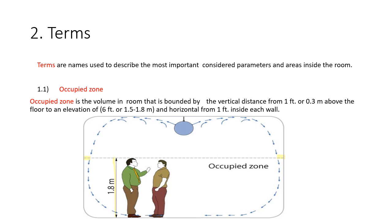We always mention the occupied zone, but what is it exactly? The occupied zone is the volume in a room bounded by a vertical distance of 1 foot (0.3 meters) above the floor up to an elevation of 6 feet, or 1.5 to 1.8 meters. Horizontally, it extends 1 foot inside each wall. This defined volume is the occupied zone.